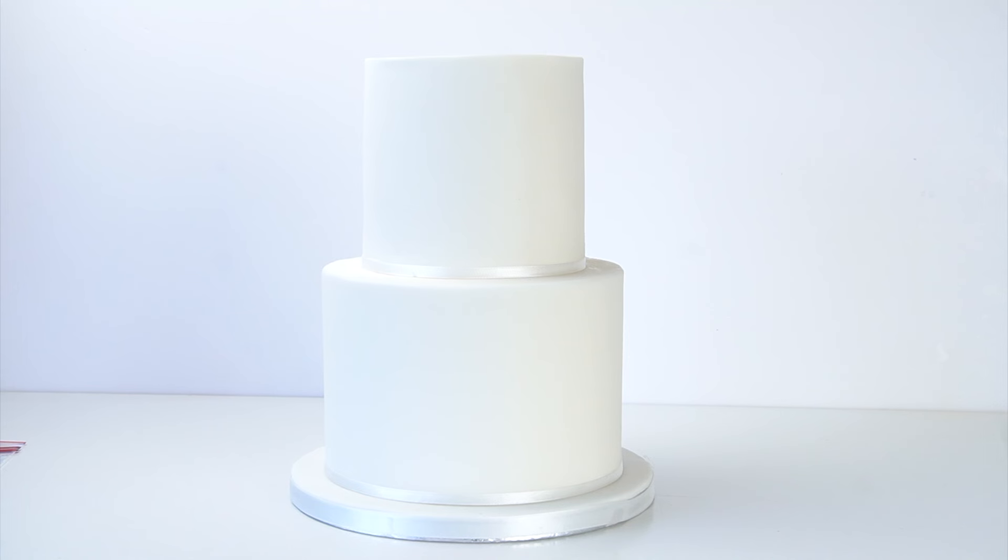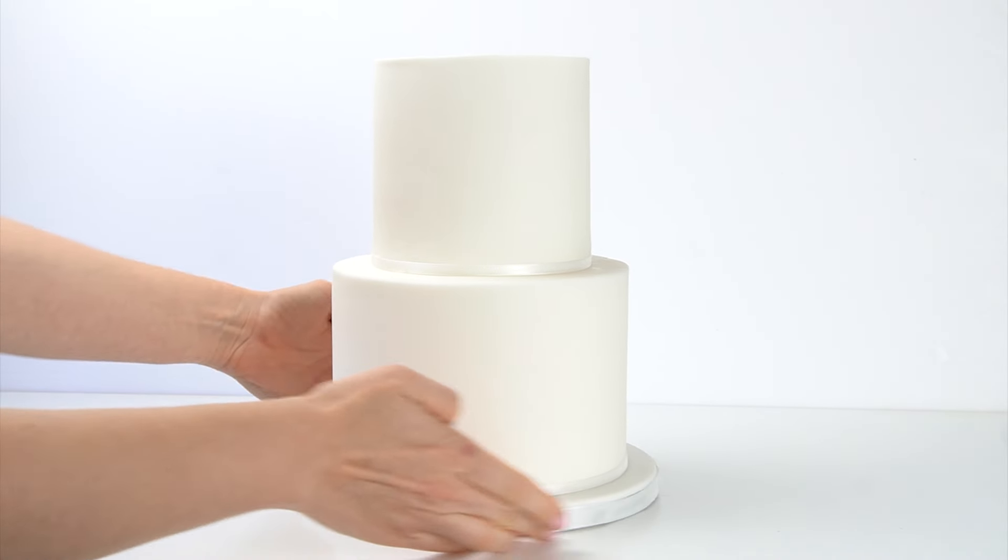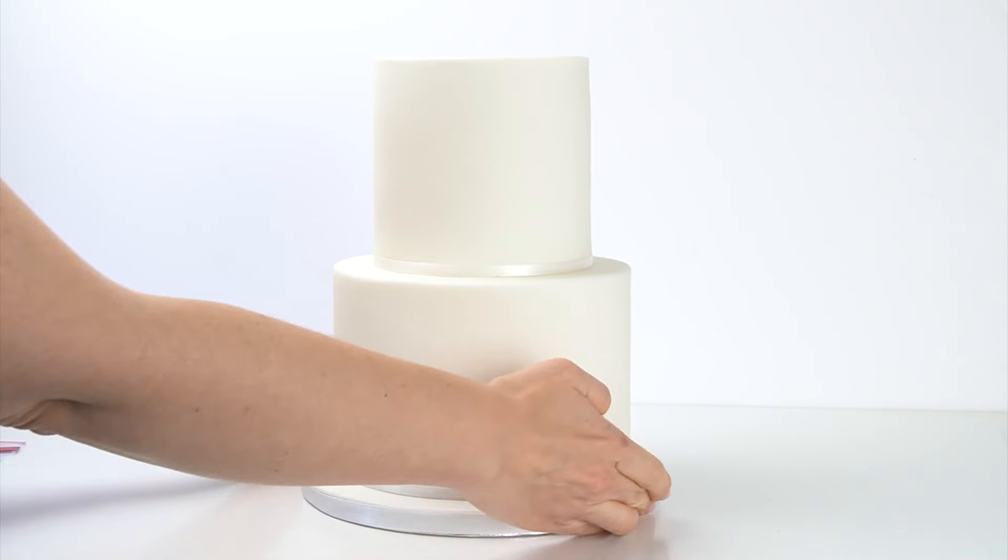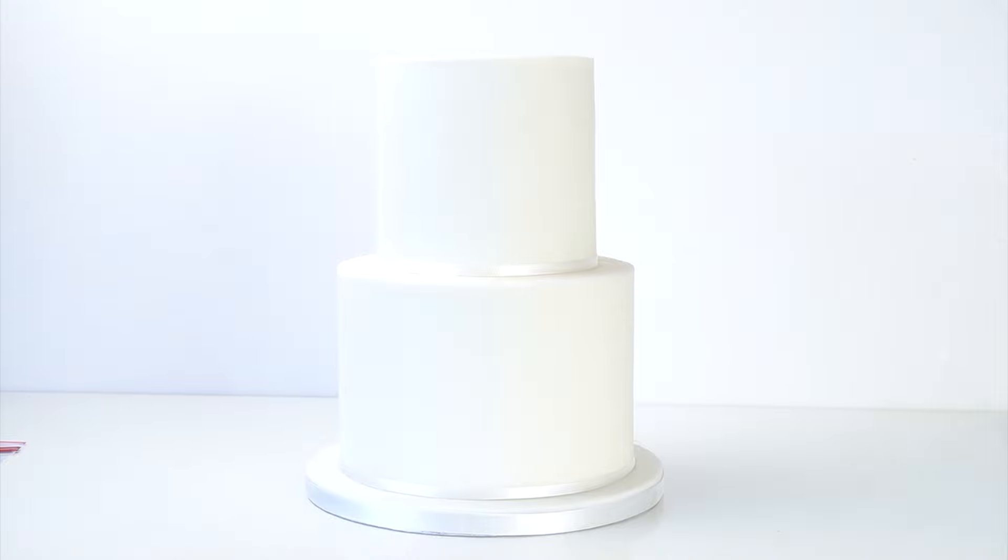I'm gonna be creating my bow to add on to my two-tier cake. My cake has a five inch tier on the top and a seven inch tier on the bottom, and for this I'm just using a dummy cake.